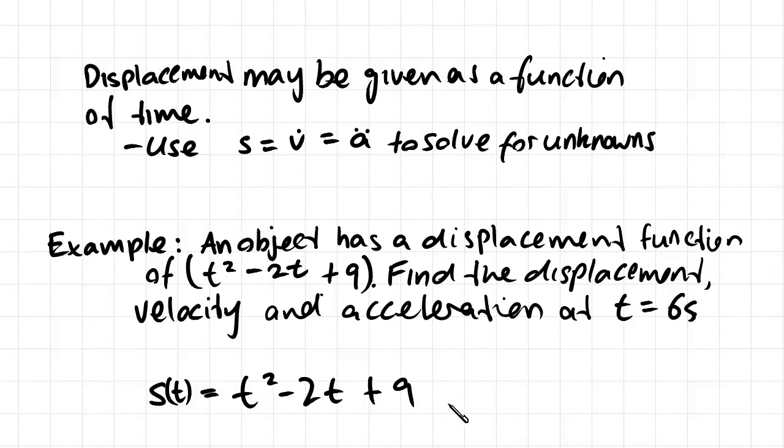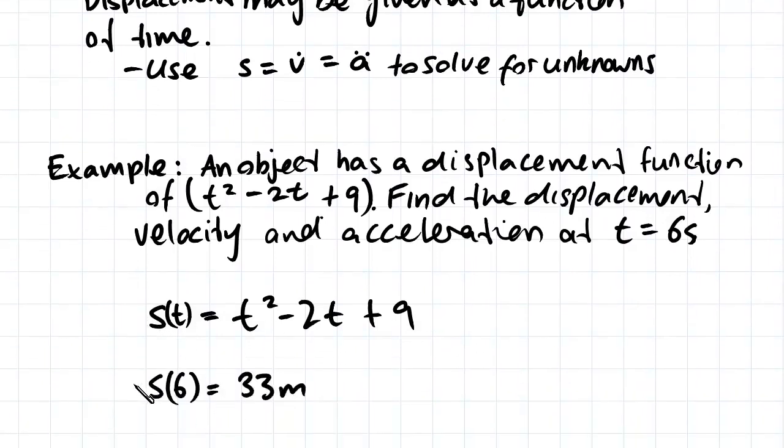If we substitute 6 for t we end up with 33 meters. So we know at 6 seconds we have a displacement of 33 meters from this starting point.